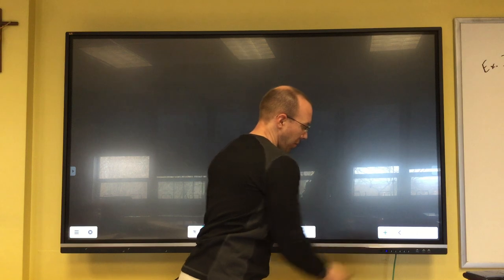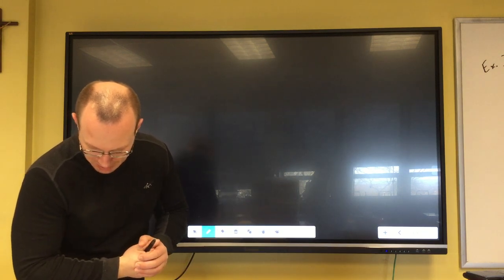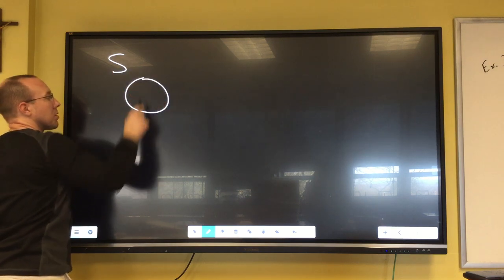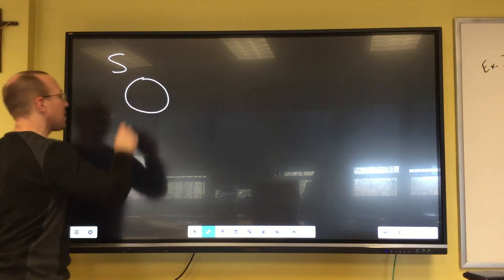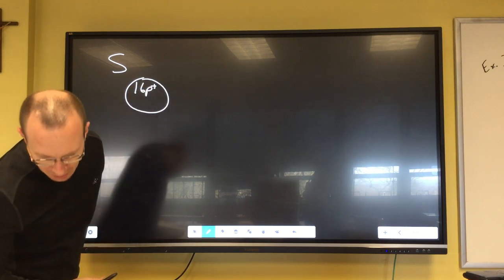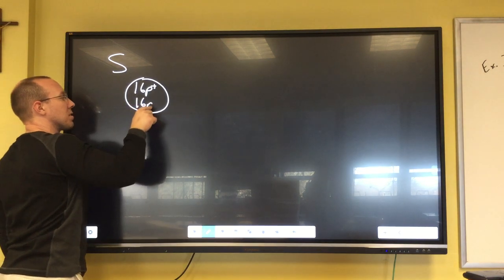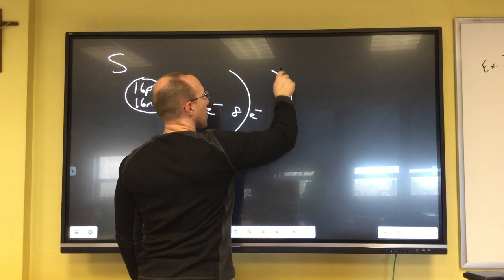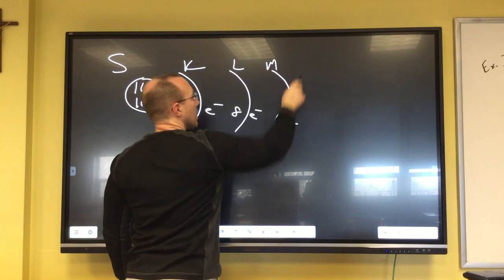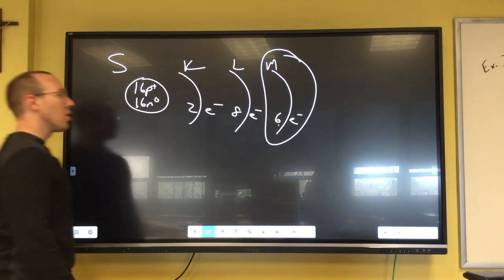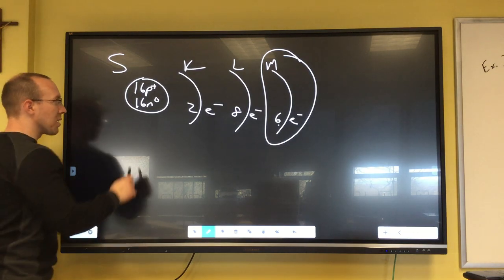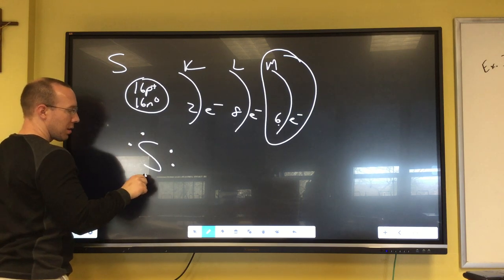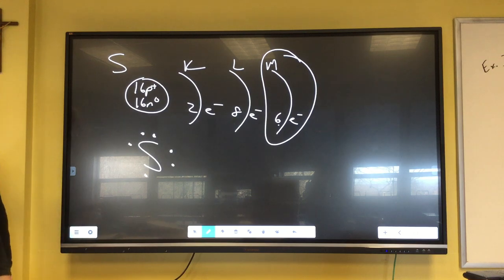Let's pick another one. Let's pick something a little bit bigger like sulfur, S. So sulfur has an atomic number of sixteen, so there's sixteen protons and it also has sixteen neutrons. So we have two electrons in the first, eight in the second, and six in the third.